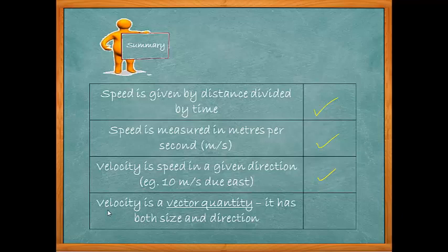Now this is a new one here. Velocity is what we call a vector quantity. A vector quantity has two things: it has both size, i.e. the speed, and direction, i.e. east, west, right, left, whatever.